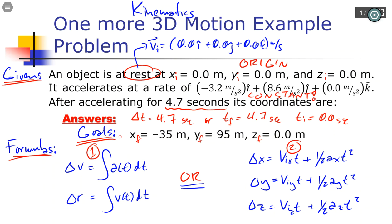For the z component, the initial z component is zero in the velocity, and the acceleration is also zero. So it doesn't even matter that the time goes on for 4.7 seconds. The displacement is going to be zero. That's one down, two to go.